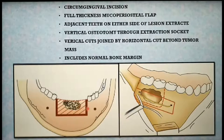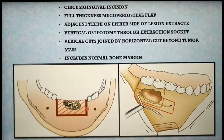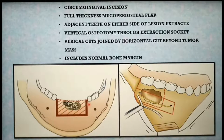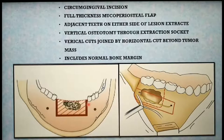Whatever excess mucoperiosteal flap is present, it is trimmed and approximated to suture the wound. This type of excision — marginal resection — can be performed under local anesthesia with sedation for smaller lesions. In the case of larger lesions, it can be planned under general anesthesia.